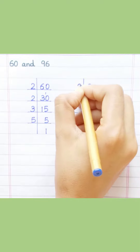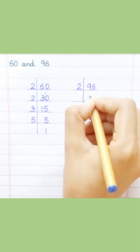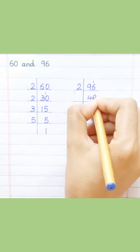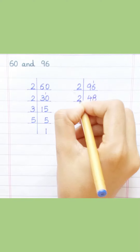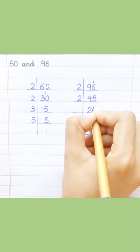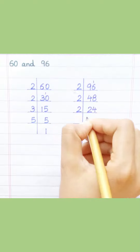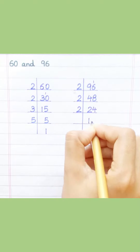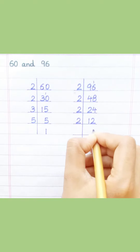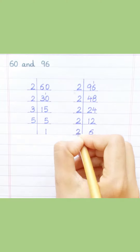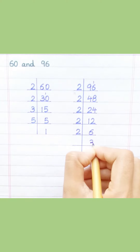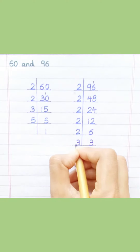96. 2 fours are 8. 2 eights are 16. 2 twos are 4. 2 fours are 8. 2 ones are 2. 2 twos are 4. 2 sixes are 12. 2 threes are 6. 3 ones are 3.